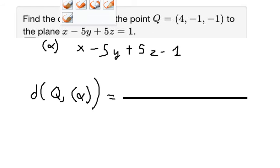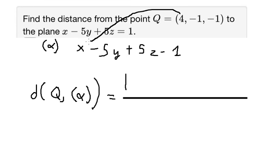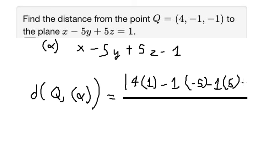So we have the absolute value. We have number four, multiply with this one. The coefficient of x is about number one, so we got about four multiply with number one. Negative number one multiply with negative number five. Negative number one multiply with positive number five.